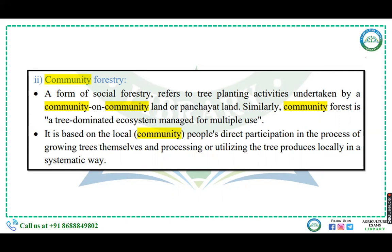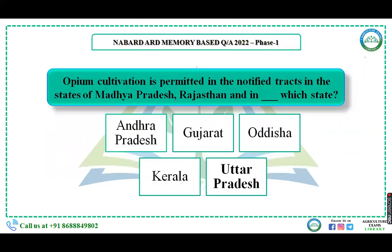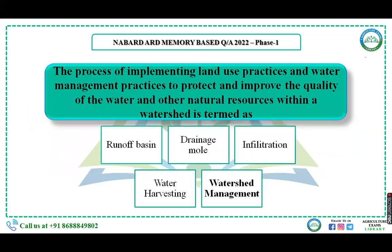Next question: optimum opium cultivation is permitted in the notified tracts in the states of Madhya Pradesh, Rajasthan, and one more state. The options were Andhra Pradesh, Gujarat, Odisha, Kerala, and Uttar Pradesh. The right answer is Uttar Pradesh.